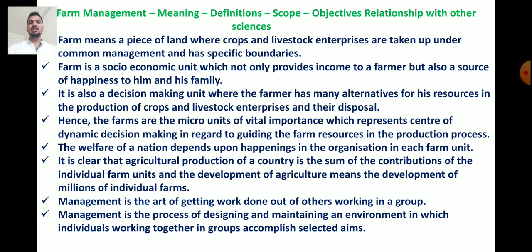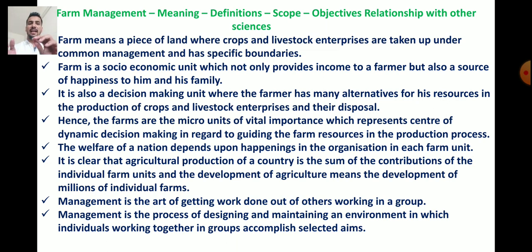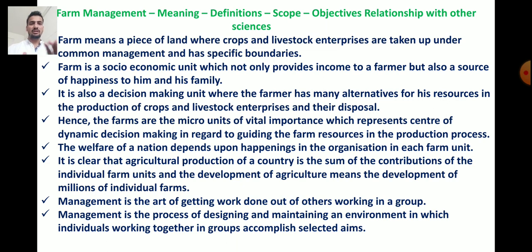What is meant by farm? A farm means a piece of land where crops and livestock enterprises are taken up under a common management and has specific boundaries. Farm is also a socio-economic unit which not only provides income to the farmer but also serves as a source of happiness and livelihood to him and his family.